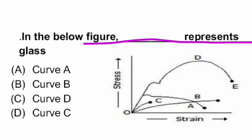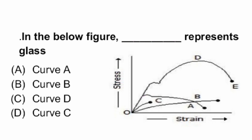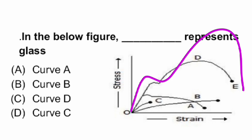In the given figure, which curve represents glass? It is undoubtedly the smallest curve, which is curve C. Because glass doesn't show any kind of deformation — once the smallest load is applied, it breaks directly at the breaking point. Curve C is the answer. The other curve is the stress-strain curve for ductile material. So our answer is curve C, which represents the stress-strain curve for glass.